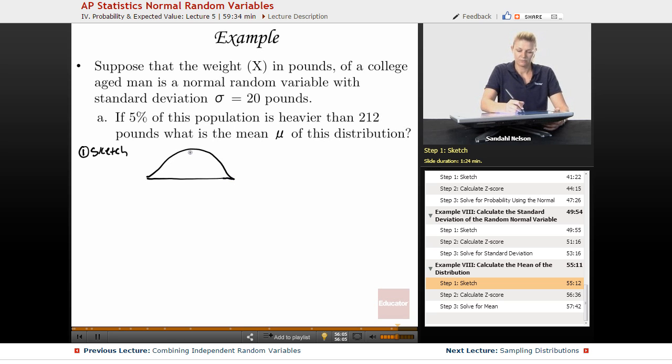Okay, so in this case we don't actually know what our mean is, so we're just going to put a question mark. But we do know that 5%, only 5%, is heavier than this 212, so it must be up here somewhere. So we have 0.05, right, 5%, and we know that standard deviation is 20 and mean is what we're solving for.